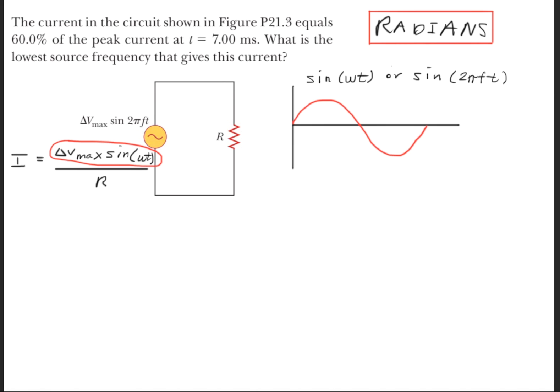The graph of sine omega t looks like this. Now, the question stated that the current equals 60% of the peak current at 7 milliseconds. So if we put that on the graph, we know that the peak will either be 1 or negative 1, and 60% is probably right around this range.